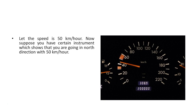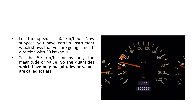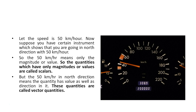Now suppose you have another instrument which shows that you are going in the north direction at 50 kilometers per hour — showing the direction also. So 50 kilometers per hour means only the magnitude or value. Therefore, quantities which have only magnitudes or values are called scalars, and quantities which have both magnitude and direction are known as vector quantities.